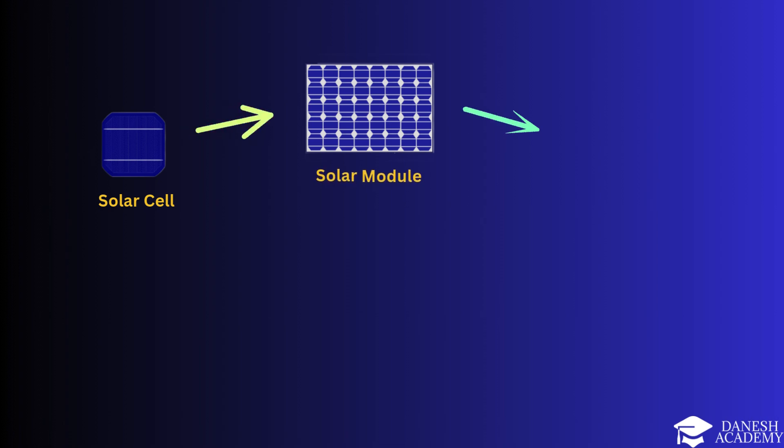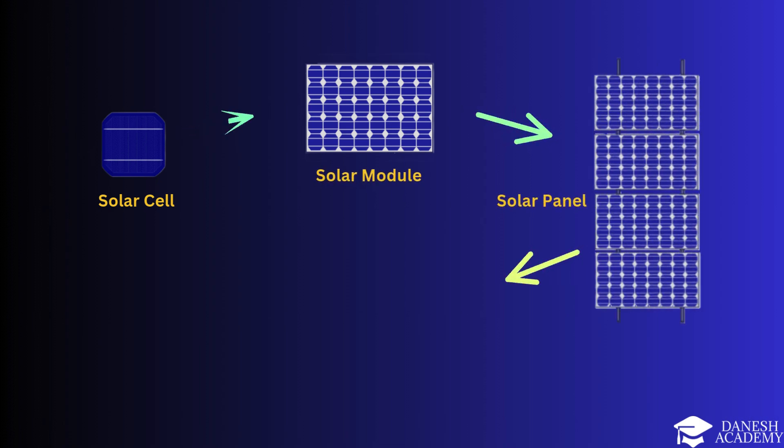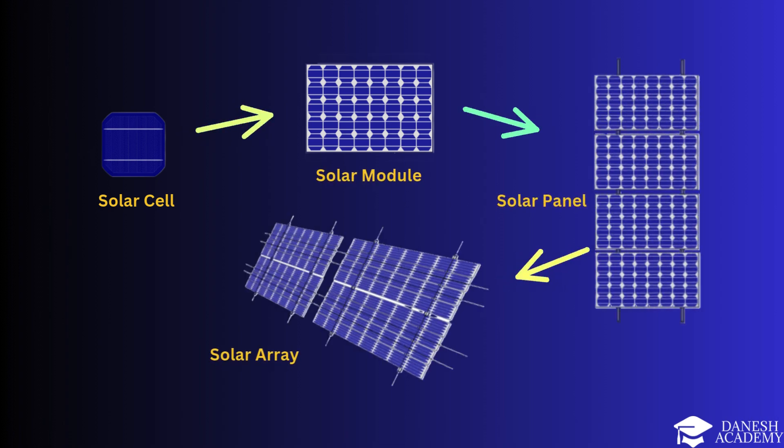Solar cell: The smallest unit that converts sunlight into electrical energy. Solar module: A collection of solar cells connected together to generate more power. Solar panel: A combination of multiple modules to produce higher energy output, suitable for residential and industrial use. Solar array: A system of multiple panels used for large-scale power generation, such as in solar farms.